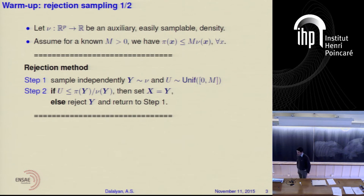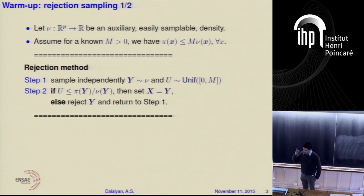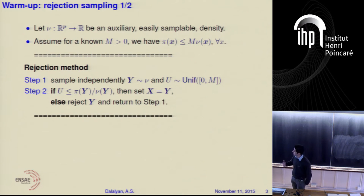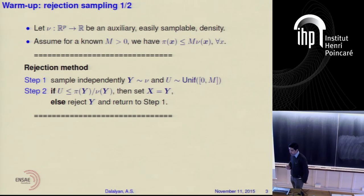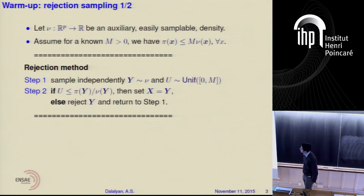Let me start with a very simple warm-up which motivates the subsequent study. With basic knowledge in probability theory, we think about the method of inversion of the probability distribution function. It works in the one-dimensional situation. For a multivariate density, the simplest thing is to use the rejection sampling algorithm. To apply it, you choose an auxiliary density function nu of X such that the target density pi is upper bounded by a constant M multiplied by nu of X for every X.